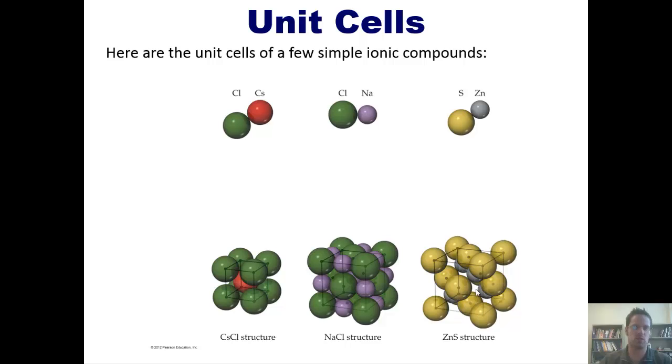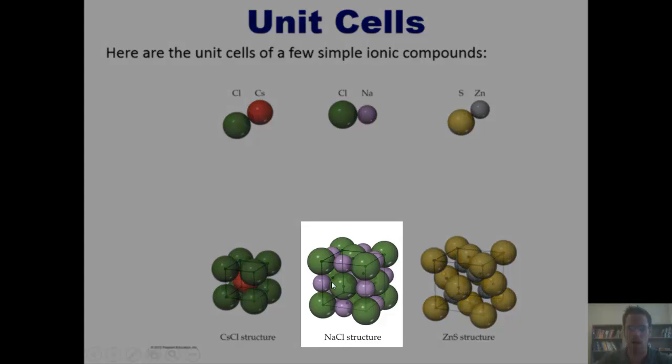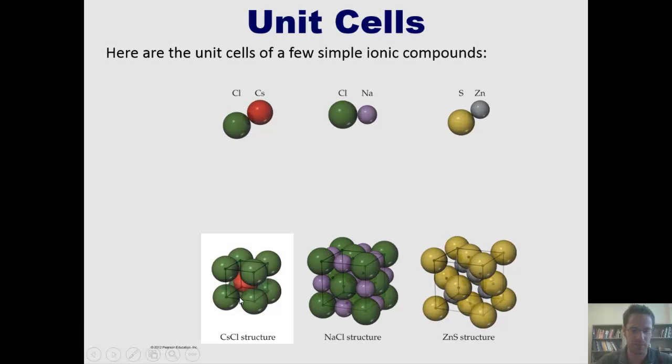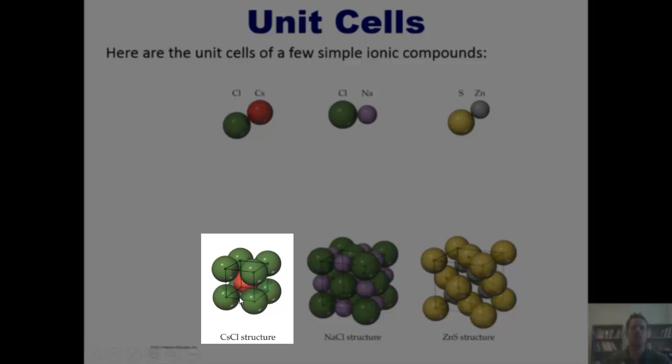Here are some generic unit cells for simple ionic compounds. We've already seen that for sodium chloride, which looks actually a little bit more complicated than the one shown here to the left, which is cesium chloride. Cesium chloride's individual unit cell looks much like the body-centered cubic unit cell that we see in some metals. Zinc chloride structure is a little bit more exotic and shown here.